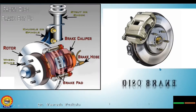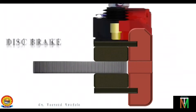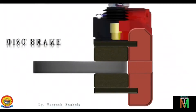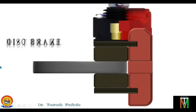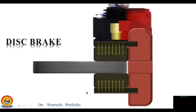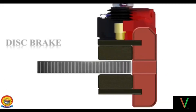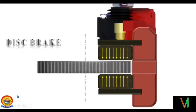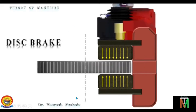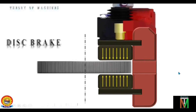Let us see how the disc brake works. The wheel is rotating and the force is applied — the applied force is in the axial direction. This is the axis of rotation and these are the applied forces. So the applied force is in the axial direction, which is why the disc brake is classified as an axial brake.